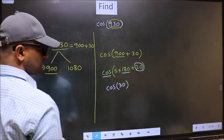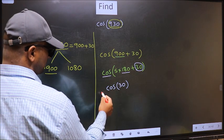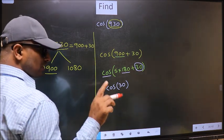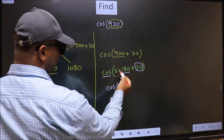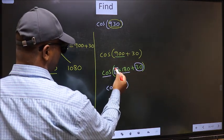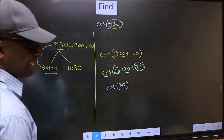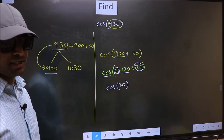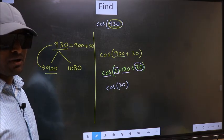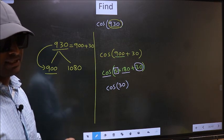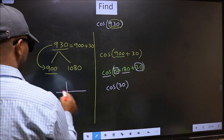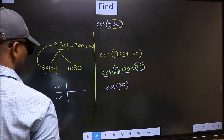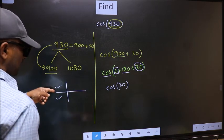Now the question is, will we get here plus or minus? To answer that, we should look at the number before 180. That is 5. And 5 is odd. And all the odd multiples of 180, they lie either in the second or in the third quadrant.